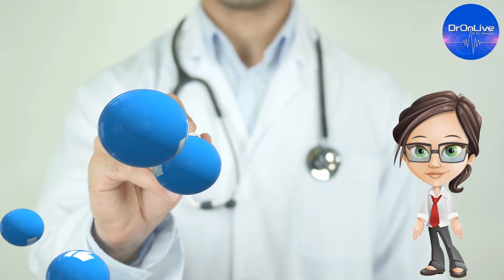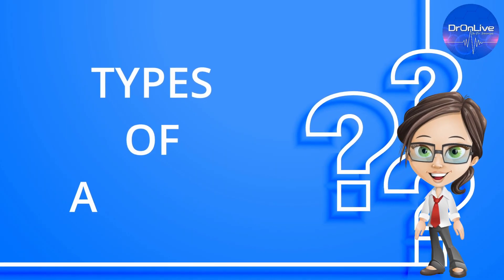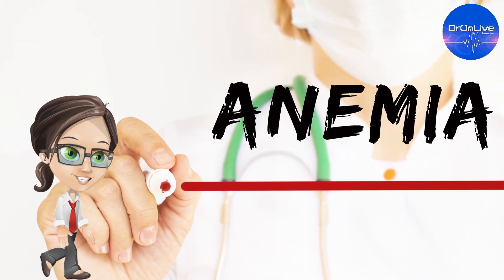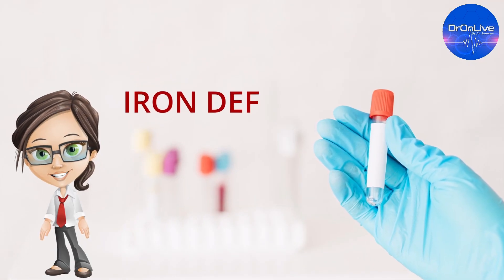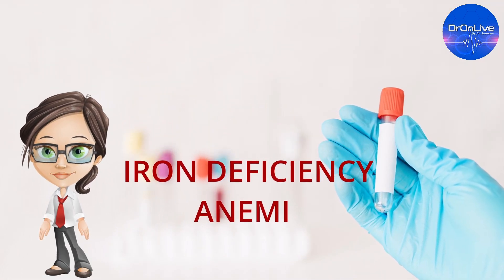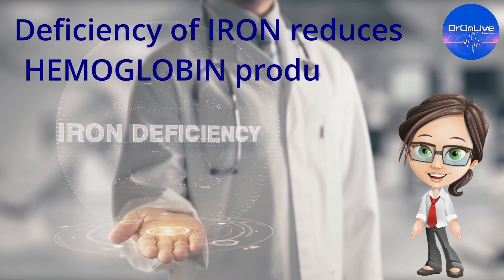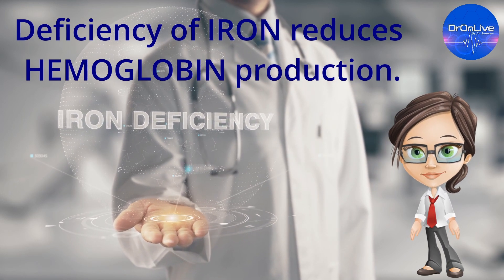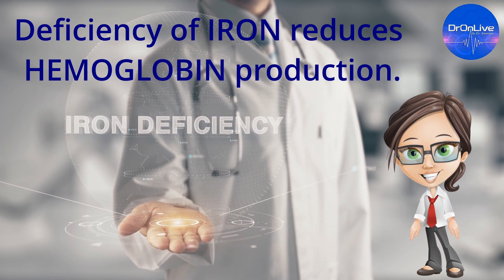So here we are going to see the different types of anemia. Anemia is broadly classified into few types. The first one is iron deficiency anemia, which is the most common form of anemia broadly seen in the majority of people. It is caused due to the deficiency of iron, which affects hemoglobin production.